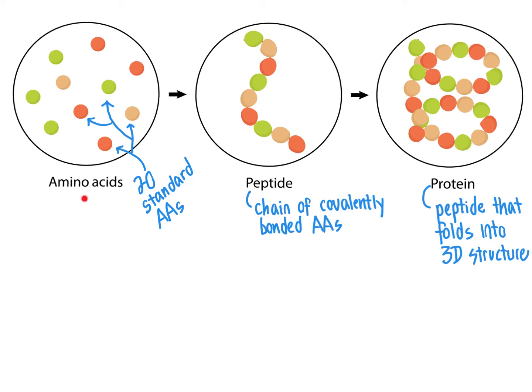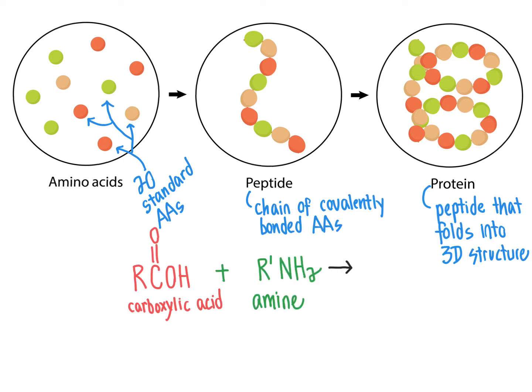But for now, what we're going to focus on is how we go from individual amino acids to the so-called peptide, which represents structures that have linked individual amino acids together. The general reaction we will look at is one we have learned previously — the reaction of a carboxylic acid with an amine to form an amide product plus water. Proteins are composed of individual pairs of amino acids that are linked together via amide bonds.